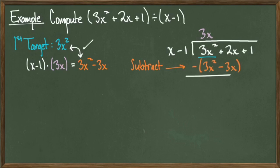Next, we have to take the product we got and subtract it from the polynomial we're dividing into. This subtraction, when we're done, gives us 5x plus 1.